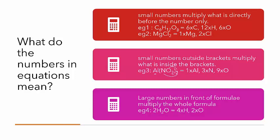Finally, we can also have large numbers in front of formulae — they're called coefficients — and those coefficients multiply the entire formula that comes straight after them. So if we've got 2H2O, for example, that tells us that we've got 2 lots of H2O, which adds up to 4 lots of hydrogen all up, and 2 lots of oxygen.